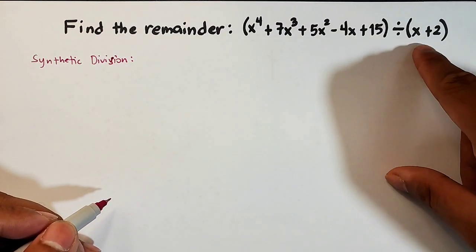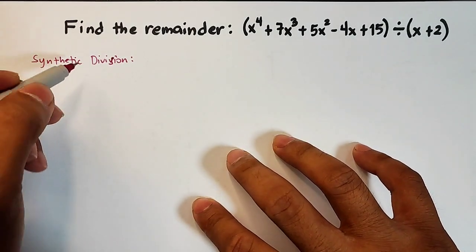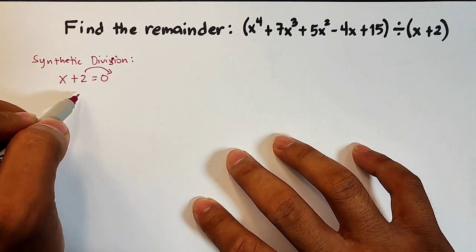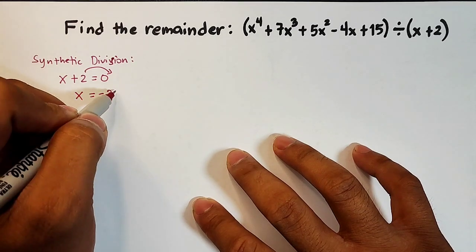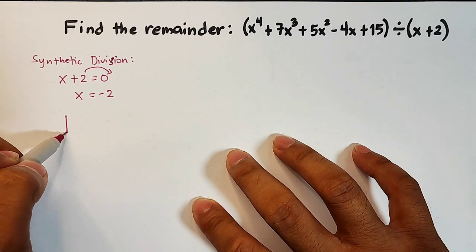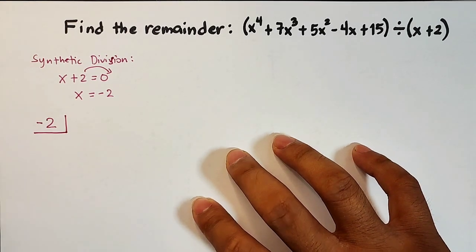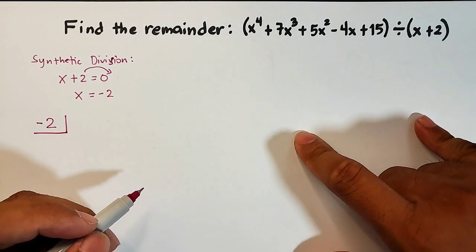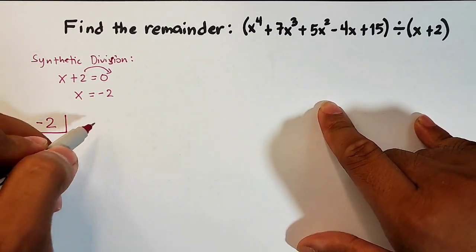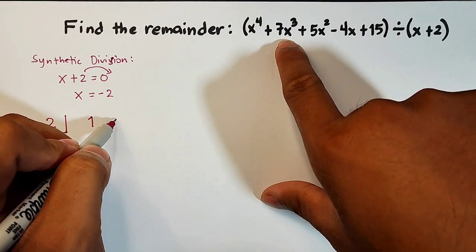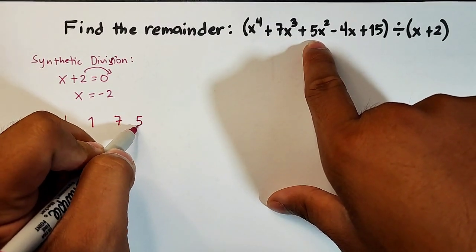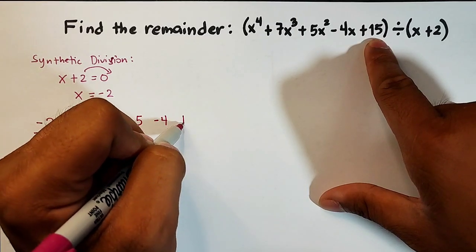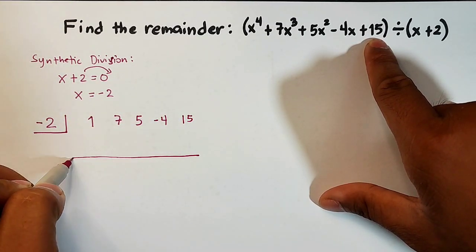For synthetic division, what we need to do is equate the divisor: x plus 2 equals 0, then transpose to get x equals negative 2. This is the number we are going to use. So we put negative 2 here, and then we take the coefficients of the polynomial terms. For x to the fourth power the coefficient is 1, for x cubed it is 7, for x squared it is 5, for x it is negative 4, and the constant is 15.